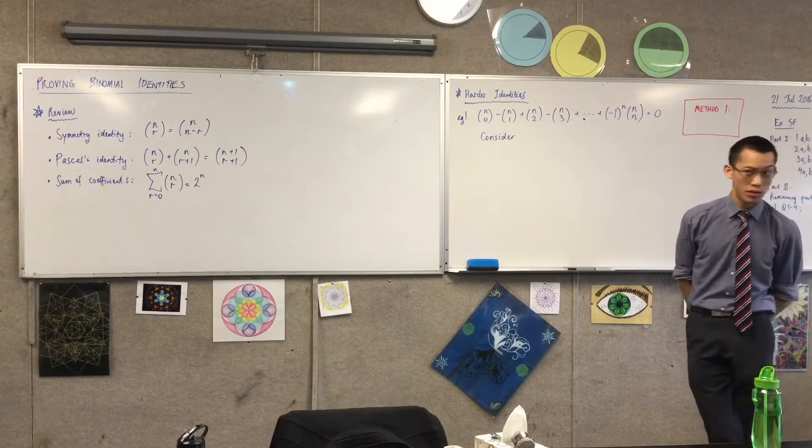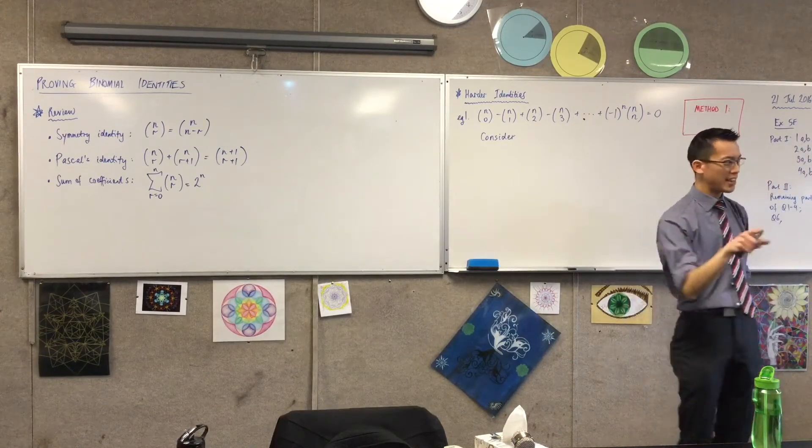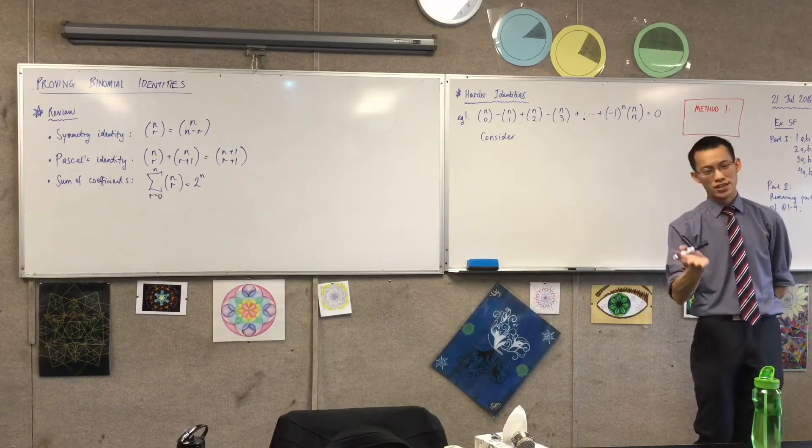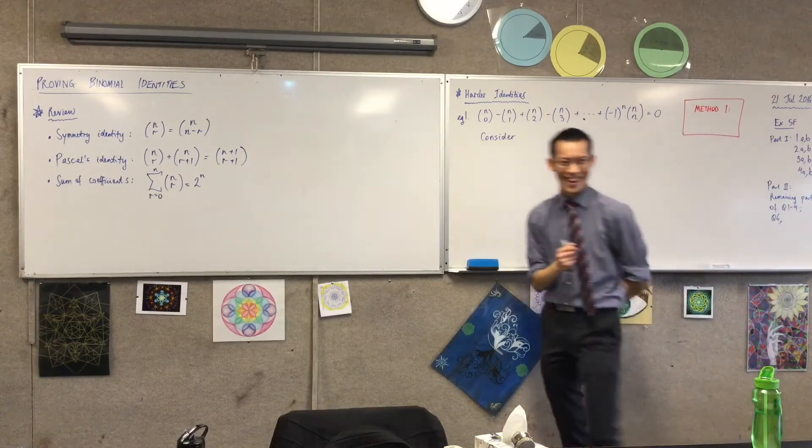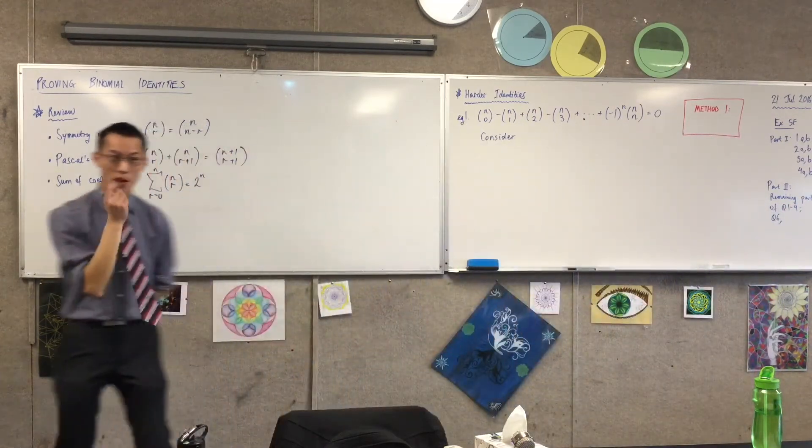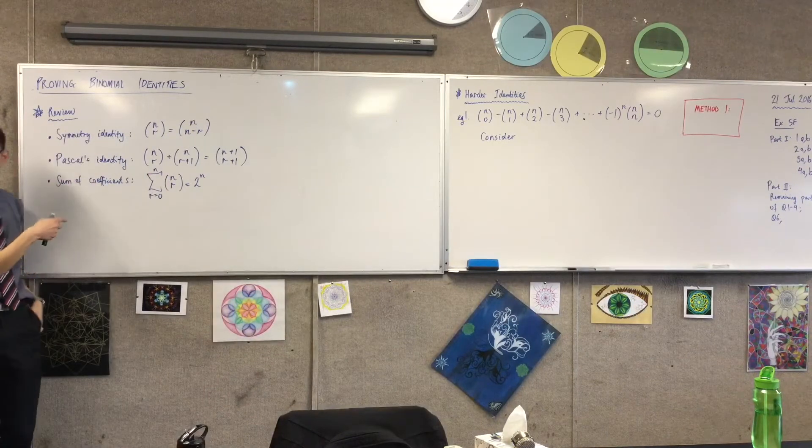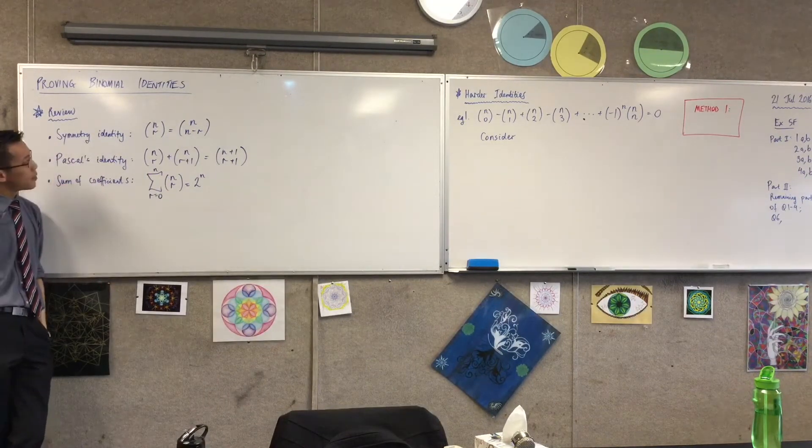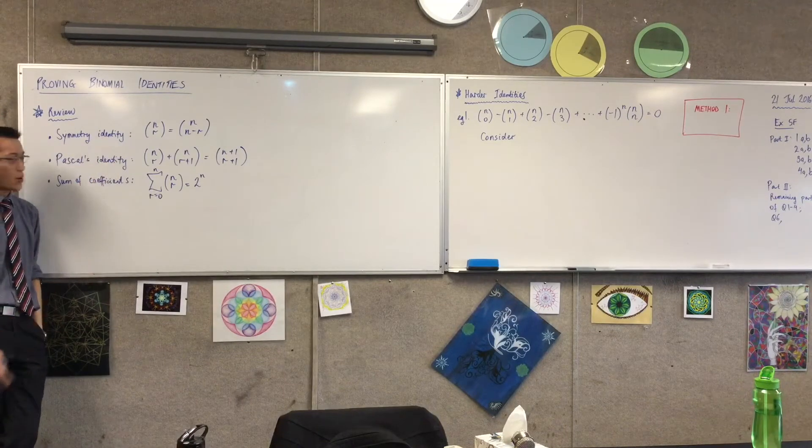Now we're going to look at binomial identities, which is really short for identities that involve the binomial coefficients. But that doesn't quite roll off the tongue as easily. So when I say binomial identities, this is the kind of stuff I mean. Now we've looked at these simple ones before. These all have names because they're so important.